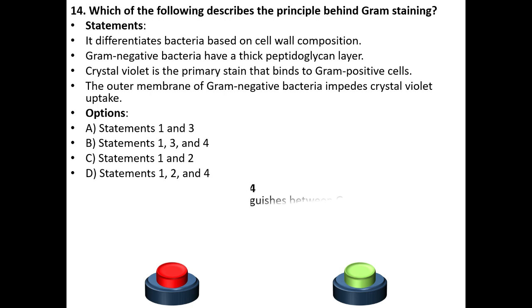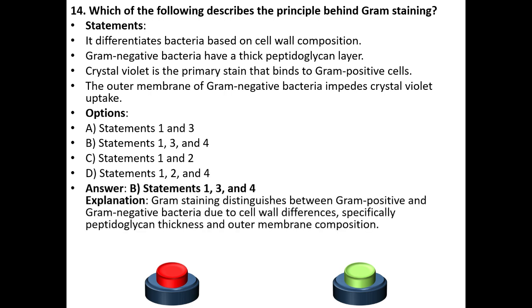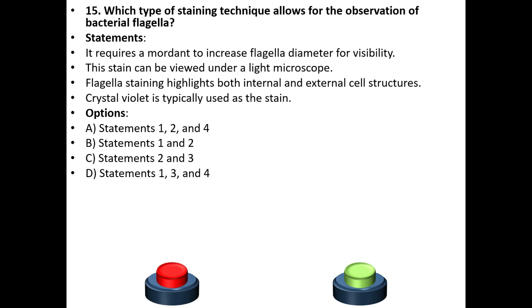The answer is B: statements 1, 3, and 4. Explanation: Gram staining distinguishes between gram-positive and gram-negative bacteria due to cell wall differences, specifically peptidoglycan thickness and outer membrane composition.